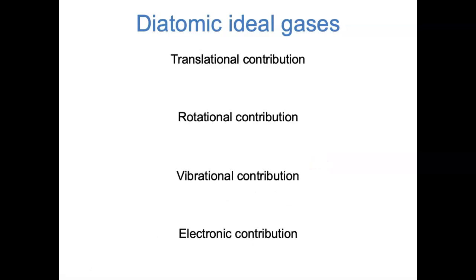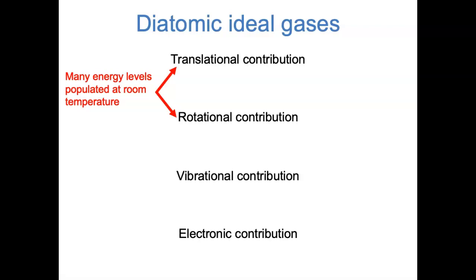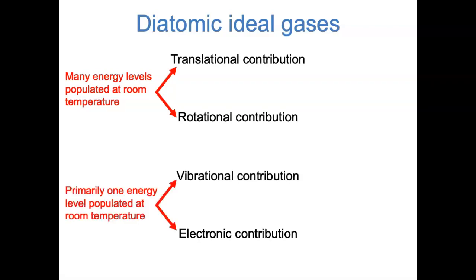This is a slide that we'll keep coming back to throughout this video. We're going to find the various contributions to the partition function and properties for a diatomic ideal gas, and fill them in on this slide until it's completely filled in by the end. This slide is arranged from types of motion with energy levels that are really close together at the top, to energy levels that are really far apart at the bottom. In general, translational and rotational energies have many levels populated at room temperature, while for vibrational and electronic energy, it's mostly the ground state that's populated.